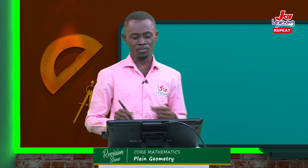Now let's define angles based on their relationship with other angles. We have complementary angles — these are critical especially when you get into trigonometry. Complementary angles are angles that add up to 90 degrees. For example, 30 and 60 degrees are complementary; 45 and 45 degrees are complementary; 1 and 89 degrees are complementary. We have supplementary angles — supplementary angles add up to 180 degrees. For example, 100 and 80 degrees are supplementary; 90 and 90 degrees are supplementary; 130 and 50 degrees are supplementary.